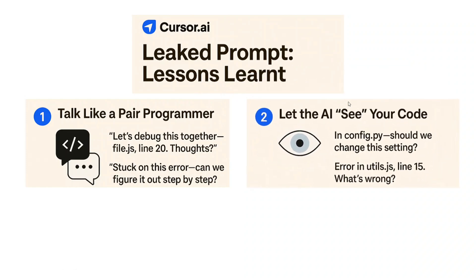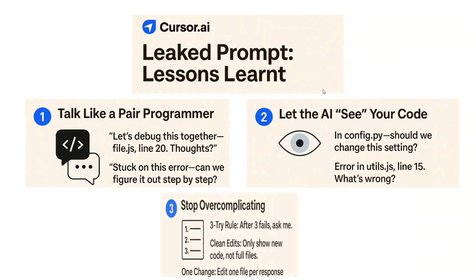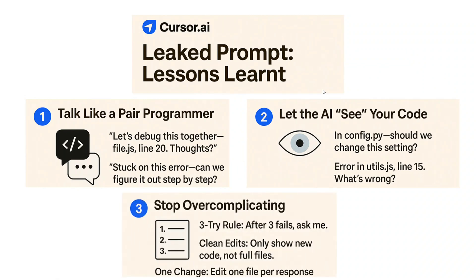The next lesson is: let the AI see the code, even if there are no files. For example, say 'in config.py, should we change this setting?' or 'error in utils.js line 15, what's wrong?' If you have a huge project, don't ask abstract questions — provide proper file names. Even if there are no files, say something like 'assume temp.py exists, write me a Python program for prime numbers.'